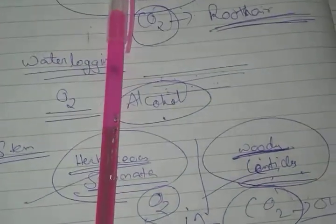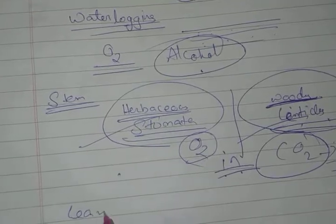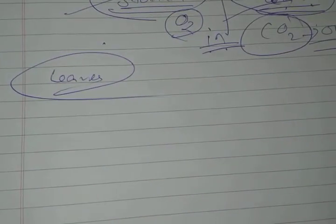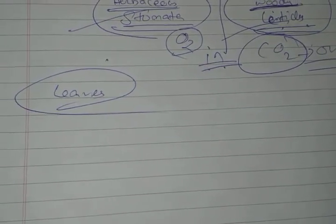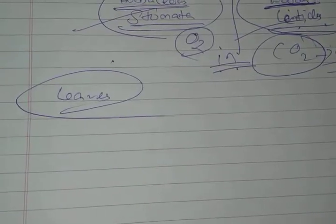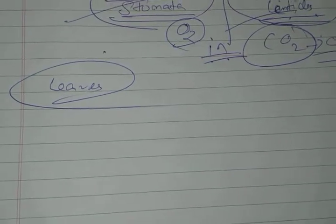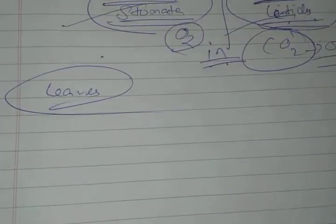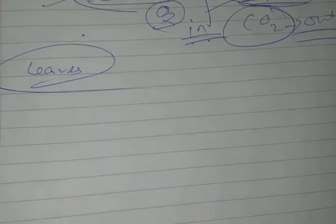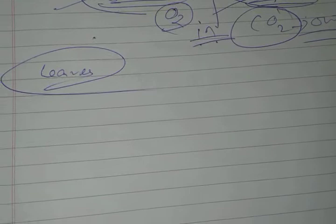Now let's know about how respiration takes place in leaves. Leaves have stomata. They respire through stomata through simple diffusion - oxygen goes in, respiration occurs, carbon dioxide is produced and it is exhaled out by simple diffusion through stomata.